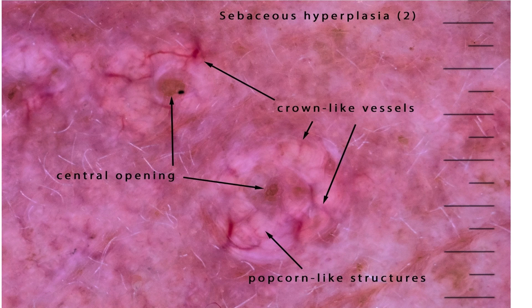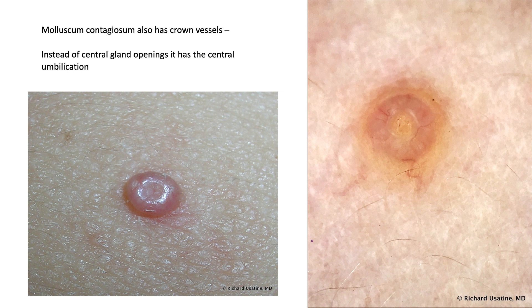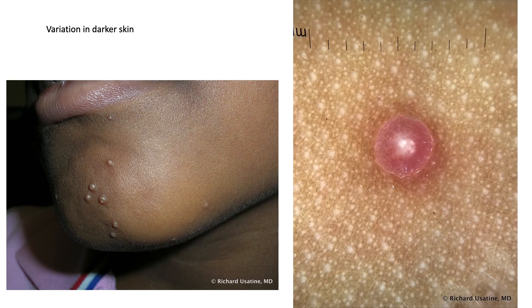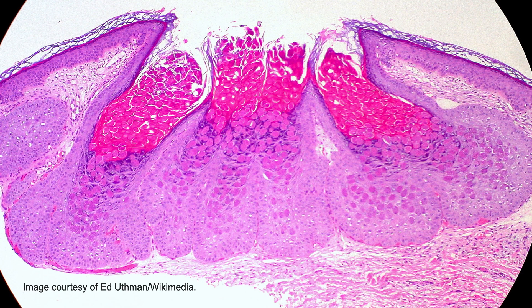Here's more buttered popcorn and some of the crown vessels with the central opening, sometimes described as a little bit of toffee candy. Now molluscum also has crown vessels, but instead of a central gland opening, it has central umbilication. Here's the central umbilication in the dermoscopy with those crown vessels. In darker skin, we can see the umbilication, and while crown vessels may not be as clear, we can still recognize a pattern consistent with molluscum. This pattern is created by the molluscum bodies with the central opening, making this umbilication.